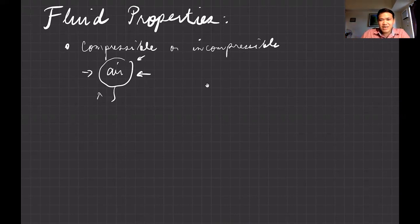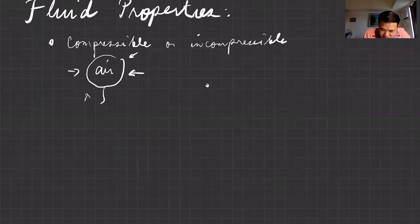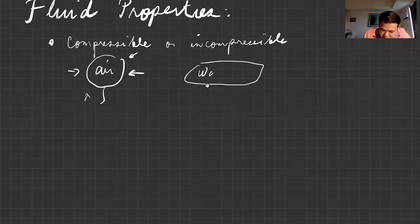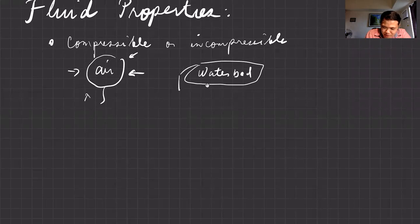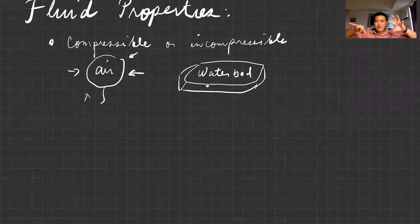Examples of nearly incompressible fluids include water. Think of a waterbed — if you jump on it, it bulges out somewhere because you cannot compress it.